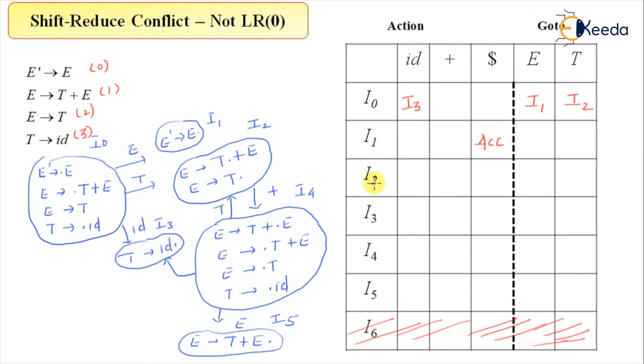I2 on input plus is going to the state I4. And that's all I guess. And I3 is a reduced state. So we'll put the entry. I4 on input T going to the state I2, and on input E going to the state I5, and on input id going to the state I3.